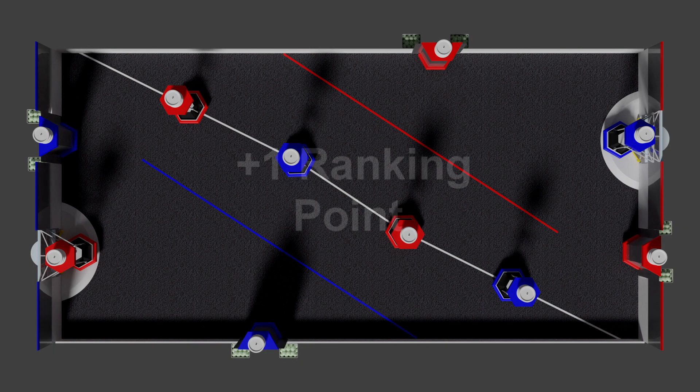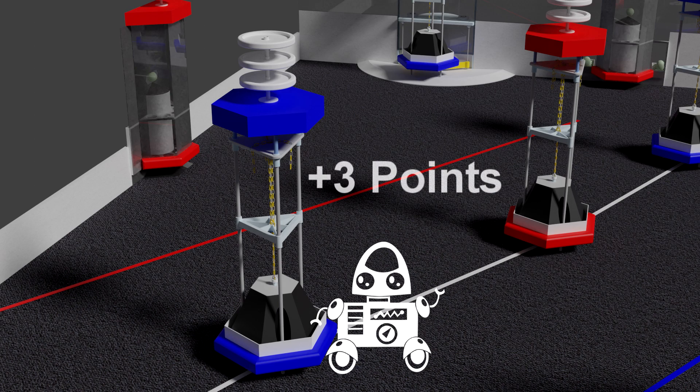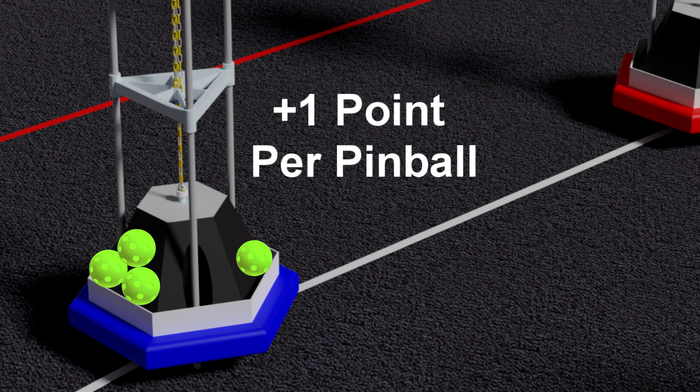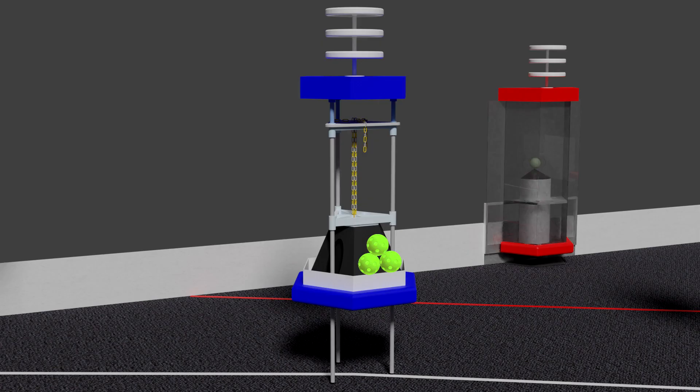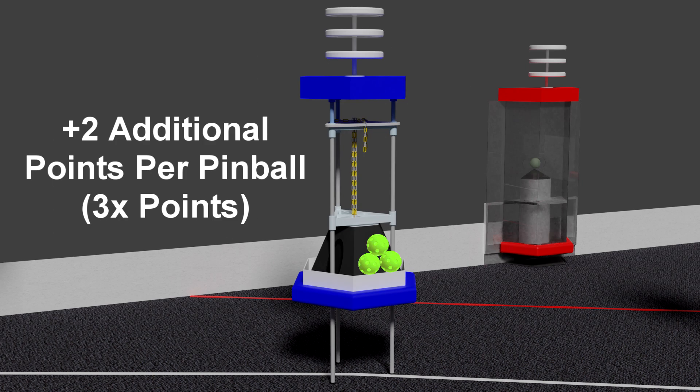A ranking point is awarded to alliances that hoist all three frustums. At the end of the match, robots in contact with one of their frustums will earn three points. Alliances earn one point for every pinball on any of their frustums and two additional points for every pinball on a hoisted frustum.